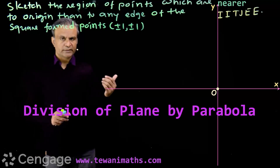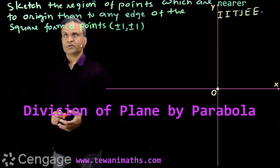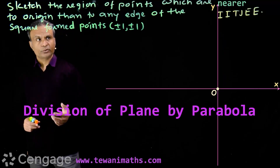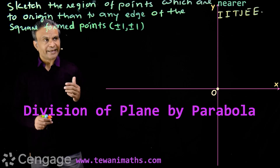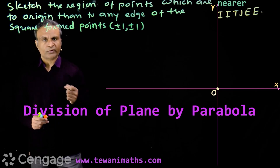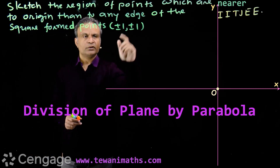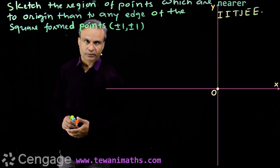Let us consider this question which was asked in the GE exam. The question is: sketch the region of points which are nearer to the origin than to any edge of the square formed by points plus minus one, plus minus one.